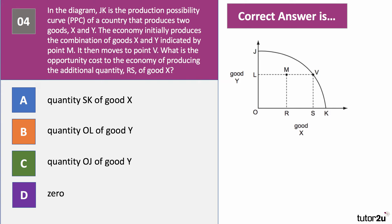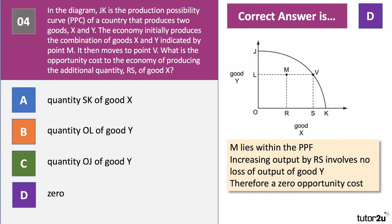Question four. Test your understanding of production possibility functions. JK is the PPF curve. Two goods, X and Y, are being produced. The economy initially produces at point M, which lies within the PPF. It then moves to point V. What's the opportunity cost to the economy of producing the additional quantity RS of good X? We've moved from a point inside the PPF to a point on it. We've increased the output of good X. What's been the loss of output of good Y? The answer is there's been no opportunity cost. M lies within the PPF, and therefore increasing output by RS involves no loss of output of good Y — zero opportunity cost.